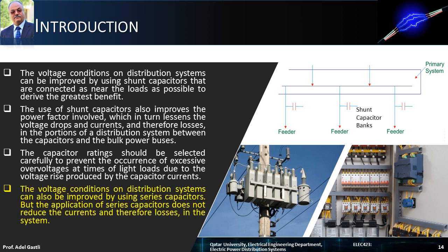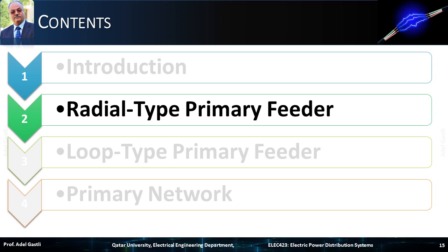The voltage conditions on distribution systems can also be improved by using series capacitors. But the application of series capacitors does not reduce the currents, and therefore losses, in the system. Next, let's see how the design considerations are applied to some types of distribution systems. The simplest, lowest cost, and therefore most common form of primary feeder is the radial type primary feeder. So let's start by studying the design considerations for the radial type primary feeder.